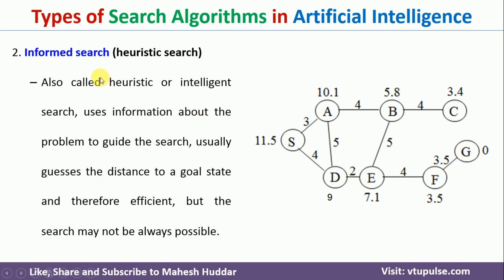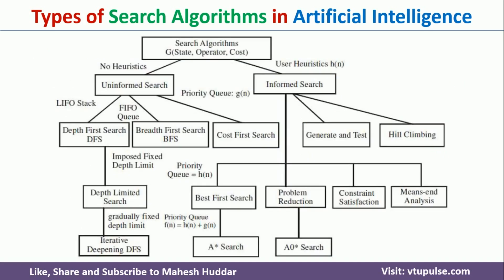I have discussed the A* algorithm in detail in another video — go through that video to understand completely how A* search algorithm works. Now, these informed and uninformed search algorithms are again categorized into multiple algorithms. Uninformed search techniques are divided into three groups mainly: depth first search algorithm, if the implementation is done with LIFO (a stack); breadth first search algorithm, if implementation is done with a queue or FIFO; and if a priority queue is used, such an algorithm is called cost first search algorithm.